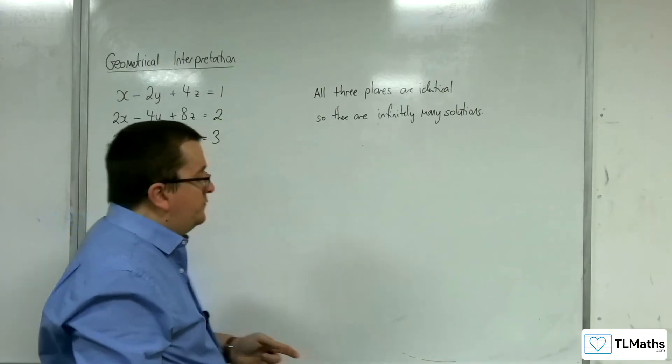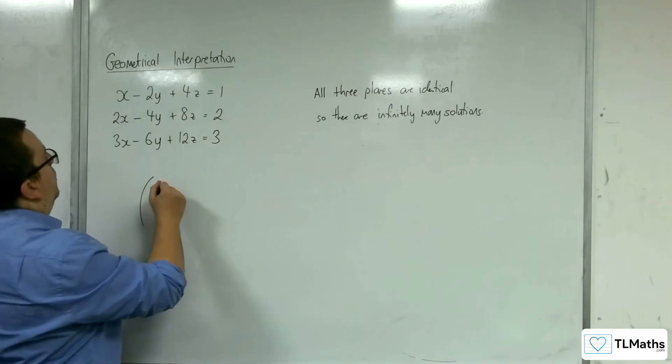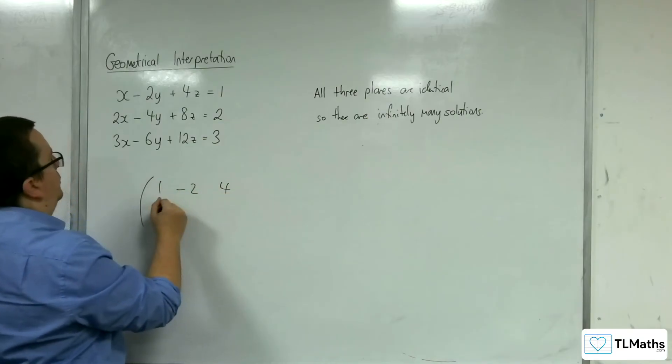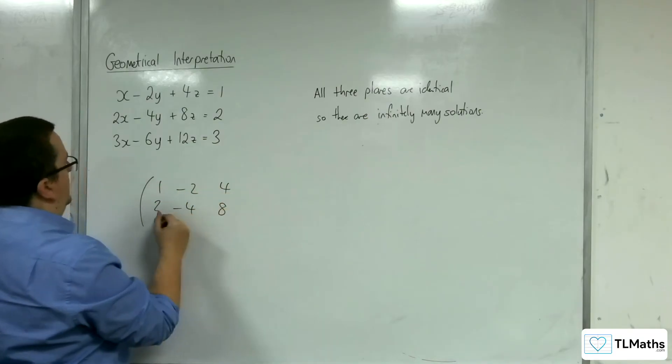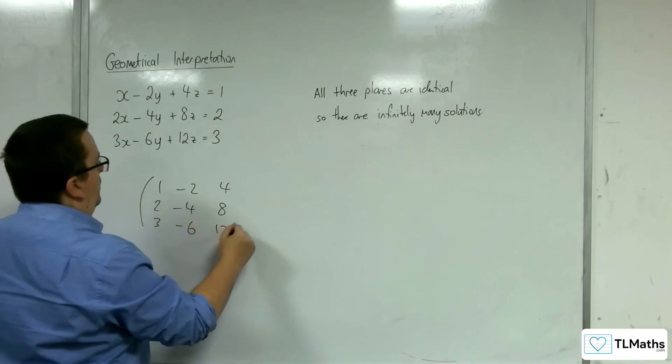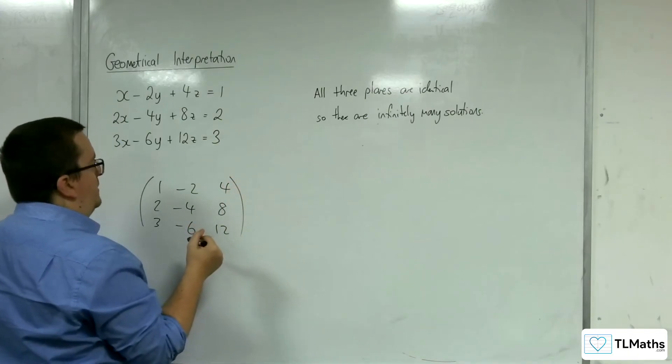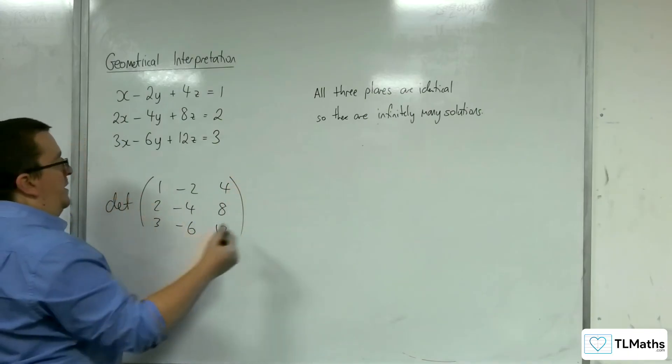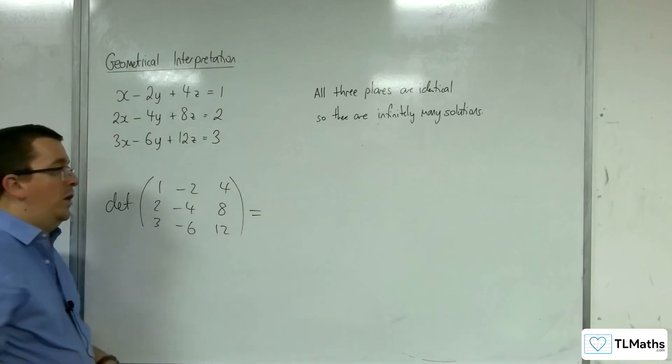Now, if you were to put 1, minus 2, 4, 2, negative 4, 8, 3, minus 6, 12 into your calculator and find the determinant of that, then you will get 0.